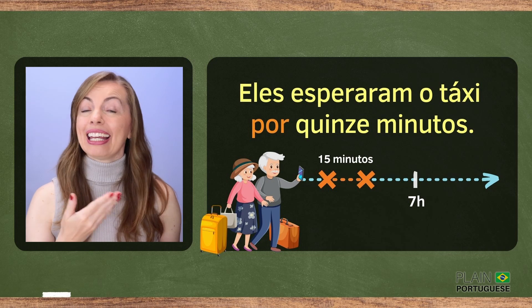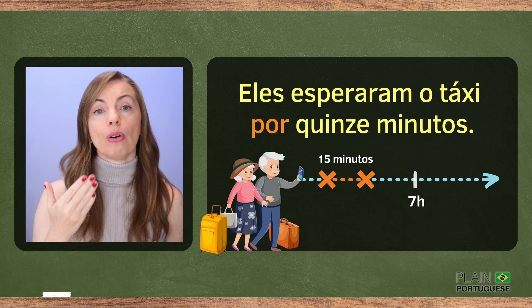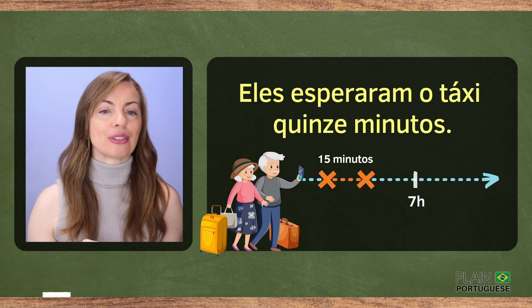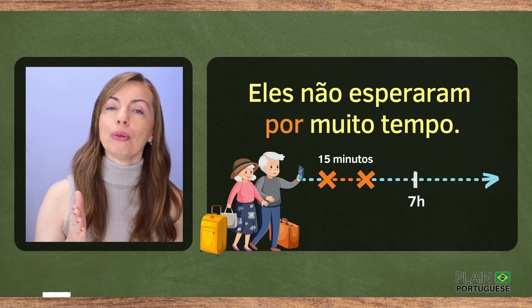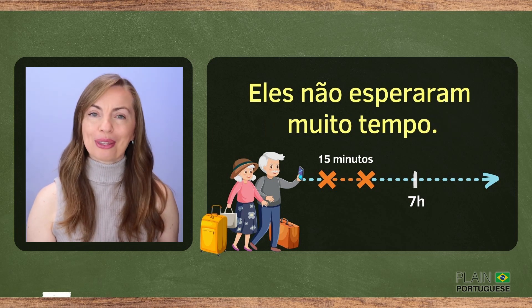Write this down: when saying how long something happened in the past, a good option is to use the preposition por, but it's quite common to omit it. So we can say Eles esperaram o táxi por quinze minutos, or simply Eles esperaram o táxi quinze minutos. Eles não esperaram por muito tempo, or Eles não esperaram muito tempo.